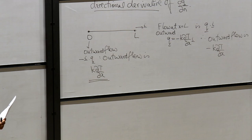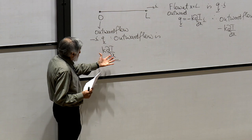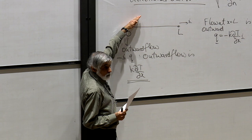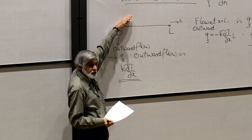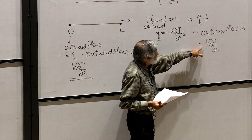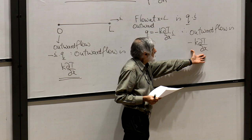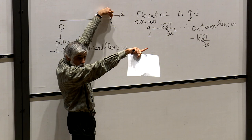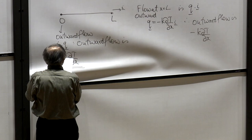I always get confused with the signs of these, so I do a check in my head. If the outward flow is positive, it means dT/dx has to be positive here. So if dT/dx was here — remember q equals minus k dT/dx means you flow down the gradient — so that's right, you would move in that direction, so the sign is right here. For x=0, if the outward flow is positive, it means dT/dx would have to be negative, which means it would look like this. And that's right, because if it looked like that you flow down the gradient, so you'd be flowing outwards.